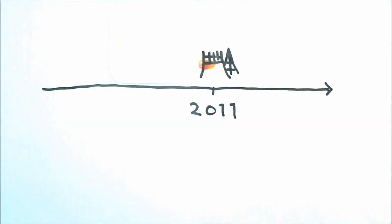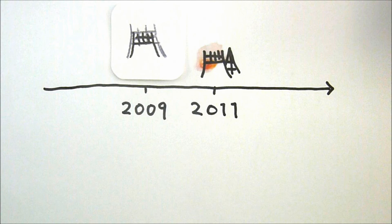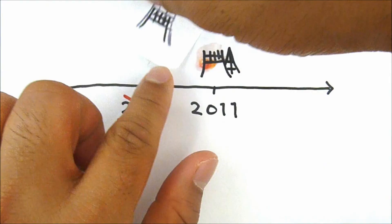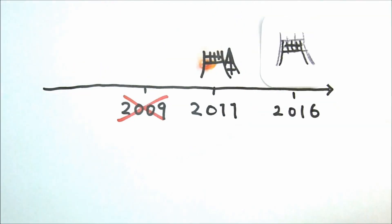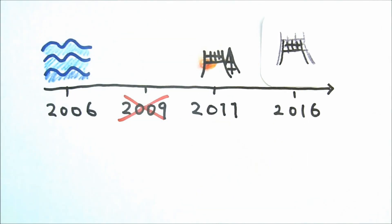They had plenty of time to take action long before the earthquake and tsunami. Yet they postponed anti-earthquake upgrades from 2009 to 2016. By 2006, they knew a large tsunami could cause a serious accident, but they failed to act.